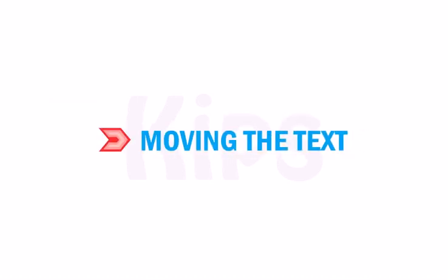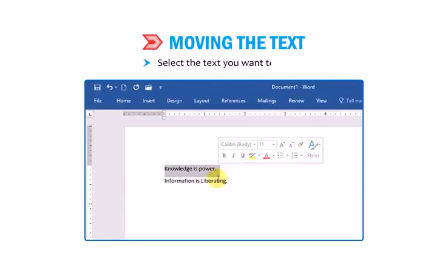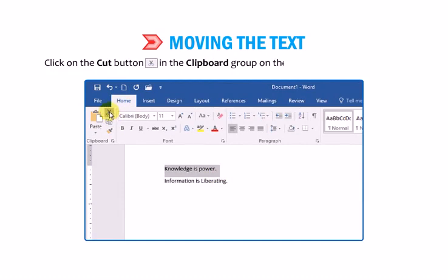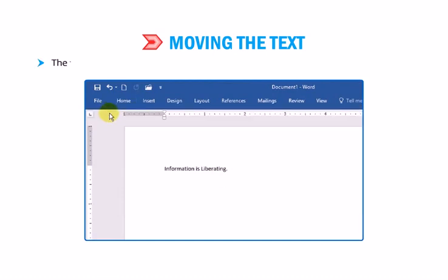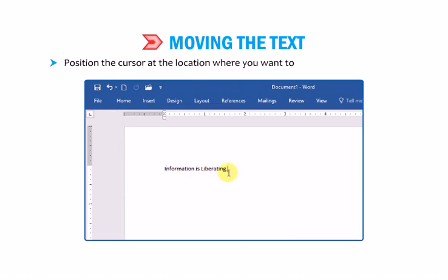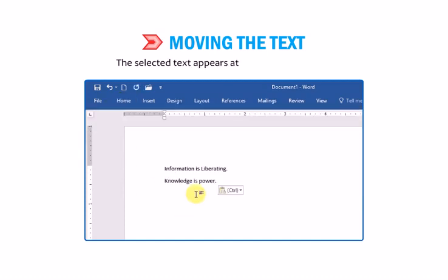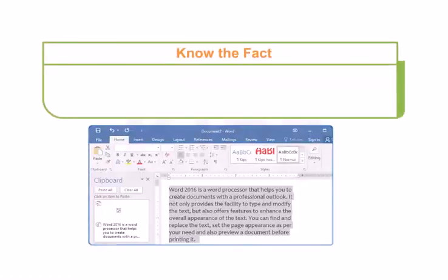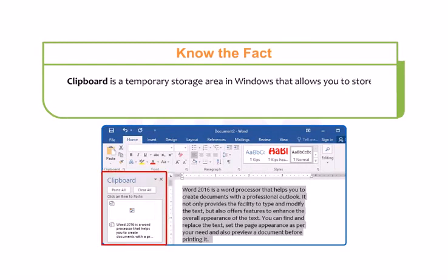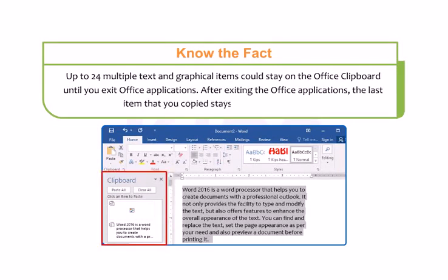Let me tell you about moving text in a document. This feature is used to move the text from its original location to a new location. Select the text you want to move. Click on the Cut button in the Clipboard group on the Home tab or press Ctrl+X. The text disappears from the document and is temporarily placed on the clipboard. Position the cursor at the new location. Click on the Paste button or press Ctrl+V. The clipboard is a temporary storage area that allows you to store, cut, copy and paste data. Up to 24 items can stay on the Office clipboard.